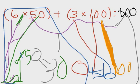How much does one group of 50 make? 50. How much does two groups of 50 make? 100.